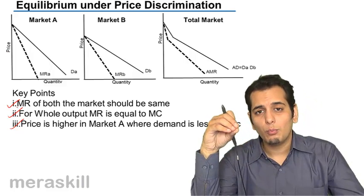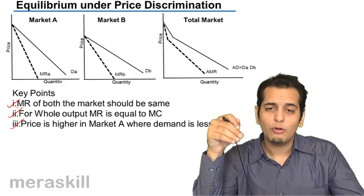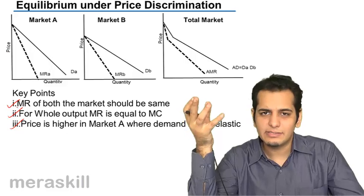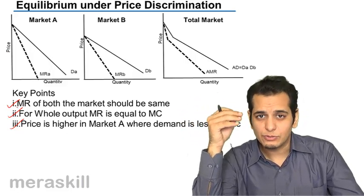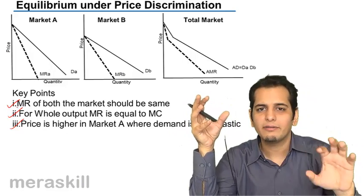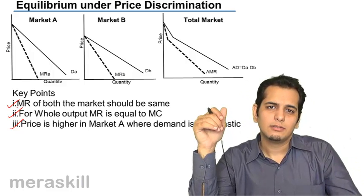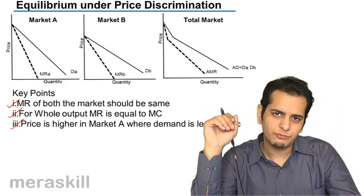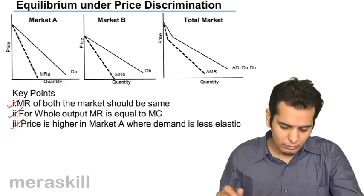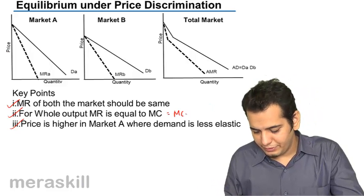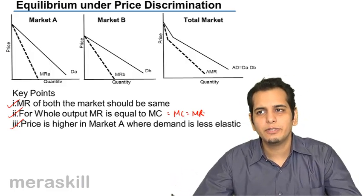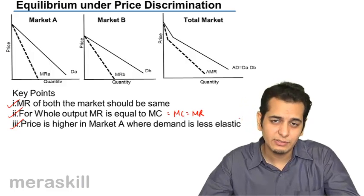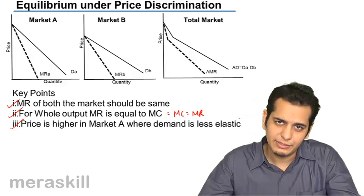Why should MR be equal in both markets? For the monopolist to achieve equilibrium, the additional revenue he gets from either market must be the same. If it is not, he will keep shifting products from the market where marginal revenue is less to the market where marginal revenue is more. Only when the marginal revenue in both markets is equal will he stop shifting products. For total output, MC should equal MR. Price in market A should be higher because elasticity is less, and price in market B should be lower because elasticity is high.